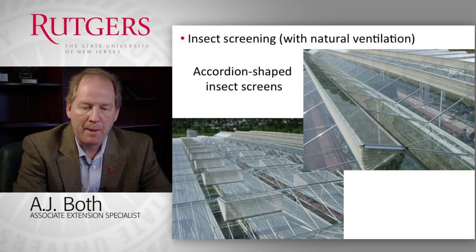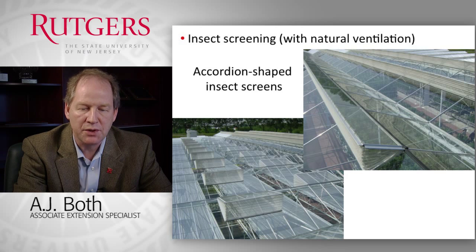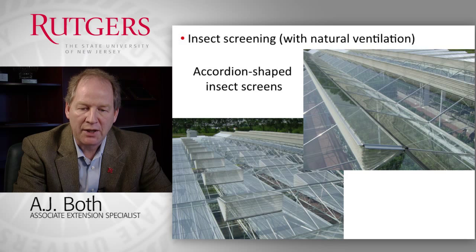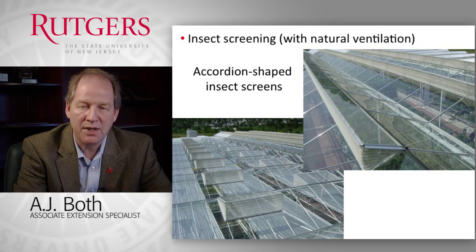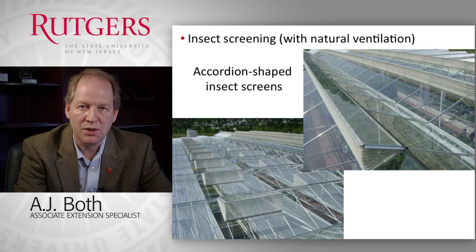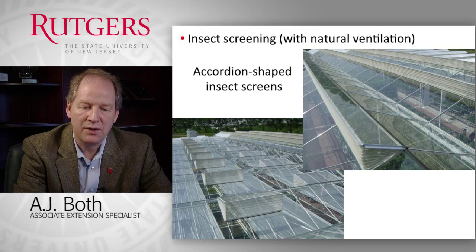This image shows some ventilation windows installed in the roof of a naturally ventilated greenhouse. If you look carefully, you see that these inlet openings are all screened with an insect screen, which is necessary to try to keep insects out. However, the insect screens add resistance to airflow as it moves in. That's why these insect screens are mounted in an accordion shape to increase their surface area. By increasing the surface area, we reduce the overall resistance to airflow, and we can still screen the ventilation openings without the added resistance being too high to prevent sufficient ventilation rates.